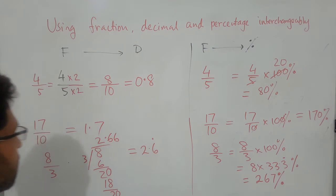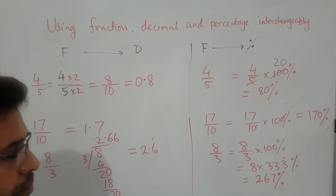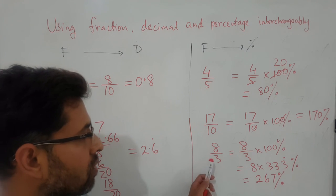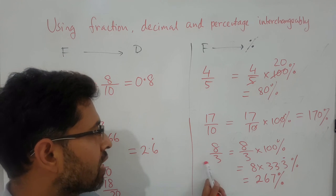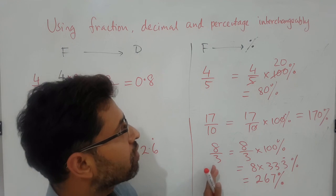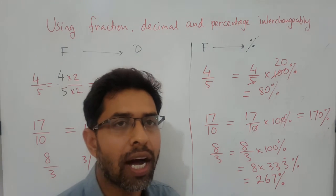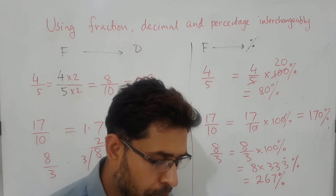So it means, if you have a fraction where the denominator is not a factor of 10 or 100, then the procedure of getting the decimal number, you have to do the long division. And then again, it doesn't matter what sort of fraction it is, in order to convert it to percentage, we just need to multiply with 100 percent, and then simplify it.